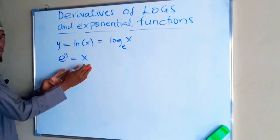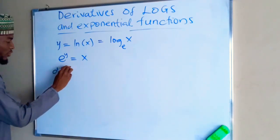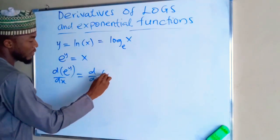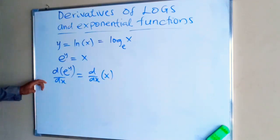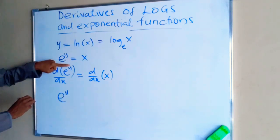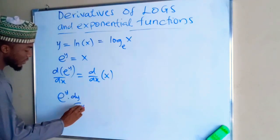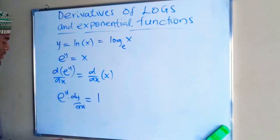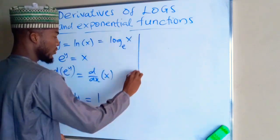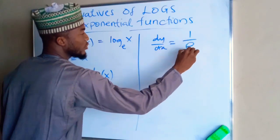Now we are going to differentiate both sides applying implicit differentiation. So d of exponential y with respect to x equals d over dx of x. If you differentiate, the exponential of a function is the same thing as that exponential of that function. But since it is y, we multiply with dy over dx, which equals 1 when you differentiate x. Now to obtain dy over dx, we divide both sides by exponential y, so we have dy over dx equals 1 over exponential y.